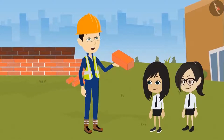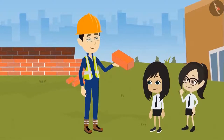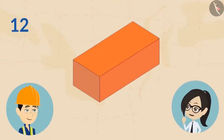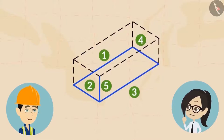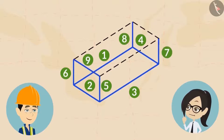Now can you count the edges of this brick? It has twelve edges: one, two, three, four, five, six, seven, eight, nine, ten, eleven, twelve.